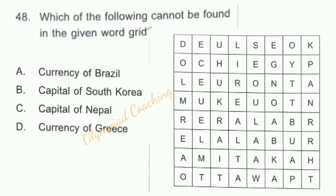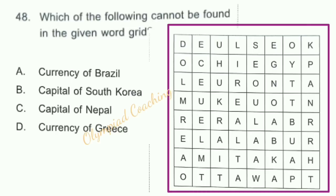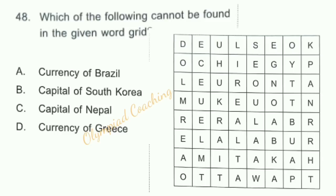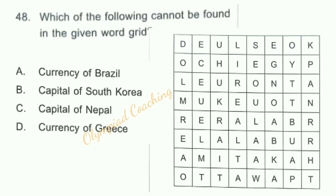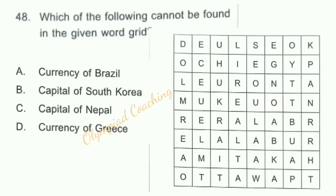Question number 48: Which of the following cannot be found in the given word grid? Option A — Currency of Brazil — is Brazilian Real; 'Real' is found in the grid. Option B — Capital of South Korea — is Seoul; 'Seoul' is found in the grid. Option C — Capital of Nepal — is Kathmandu; but we cannot find Kathmandu in the given word grid. So option C is the answer.